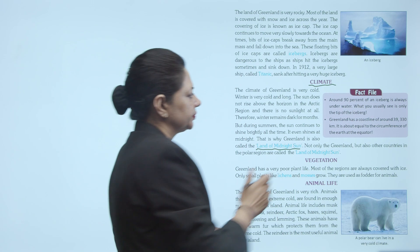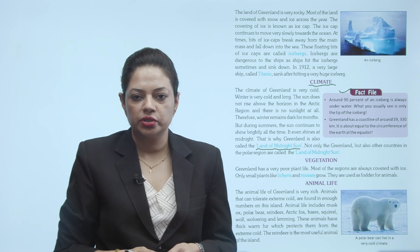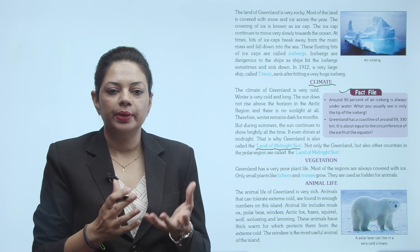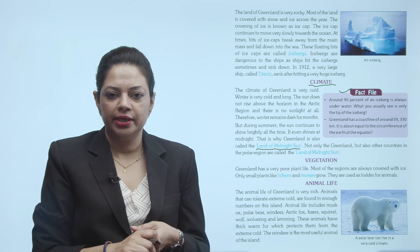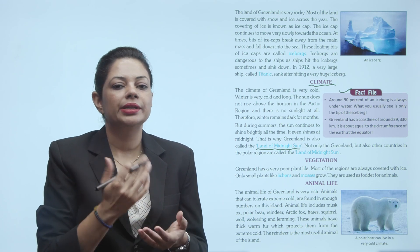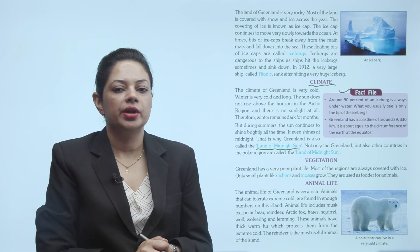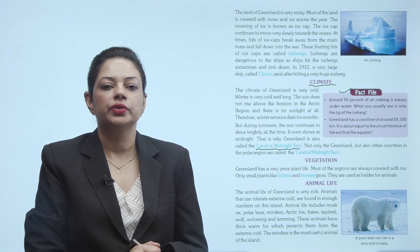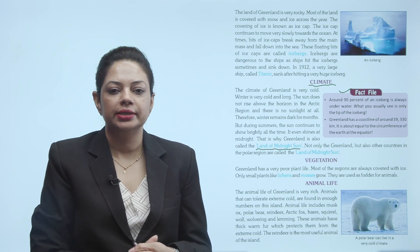Come to the fact file. Around 90% of an iceberg is always underwater. What you usually see is only the tip of the iceberg. Greenland has a coastline of around 39,330 km — it is about equal to the circumference of the earth at the equator.